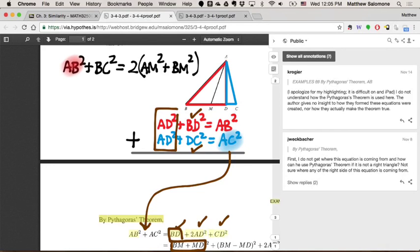So what we still have to figure out is how we're going from this line to this line, because what it looks like is that the author is replacing CD with BM minus MD. So we have to sort of figure out why that would be. But once that replacement gets made,